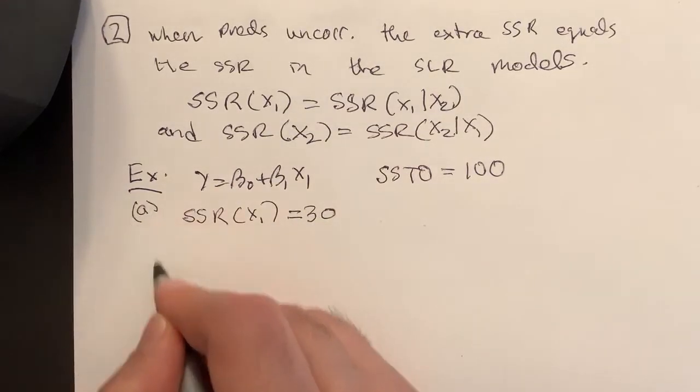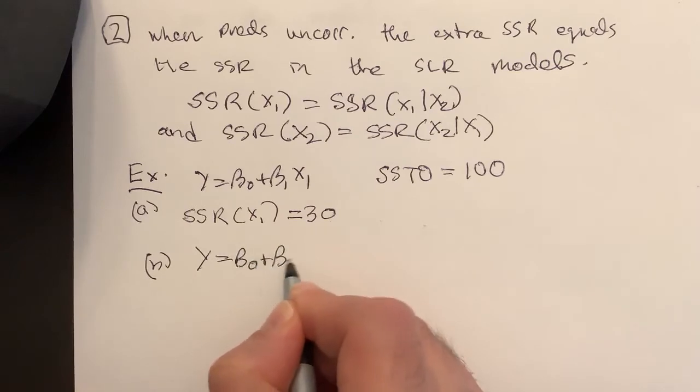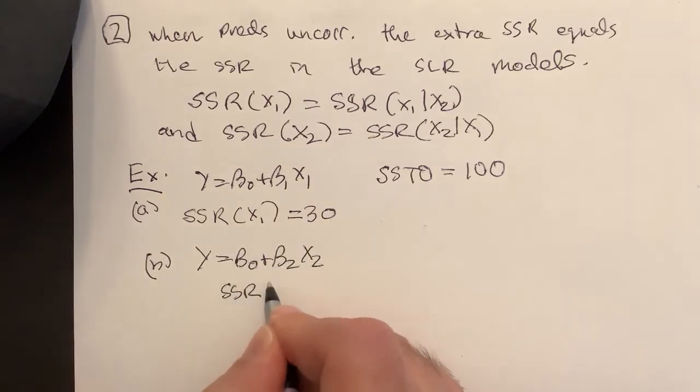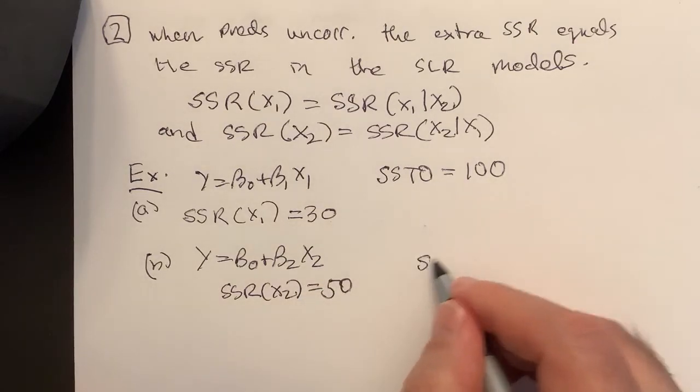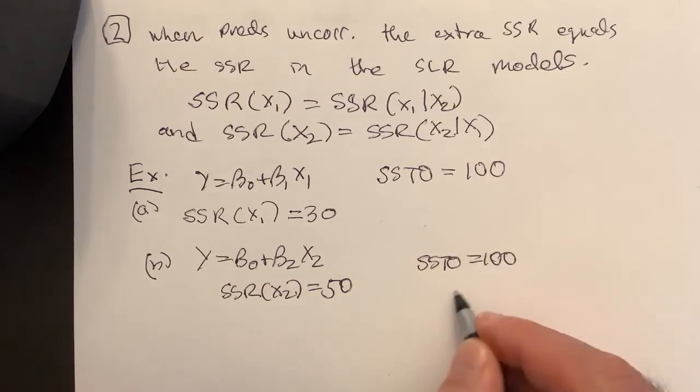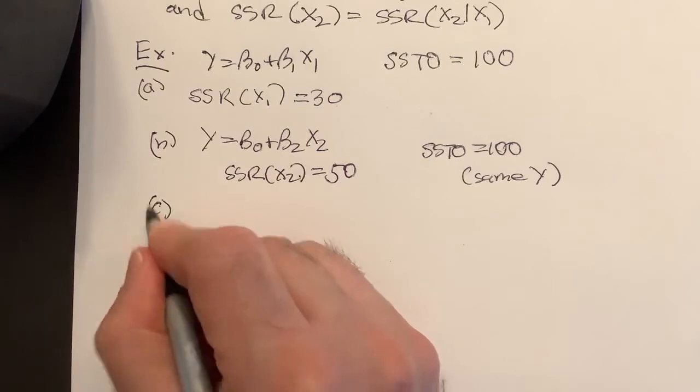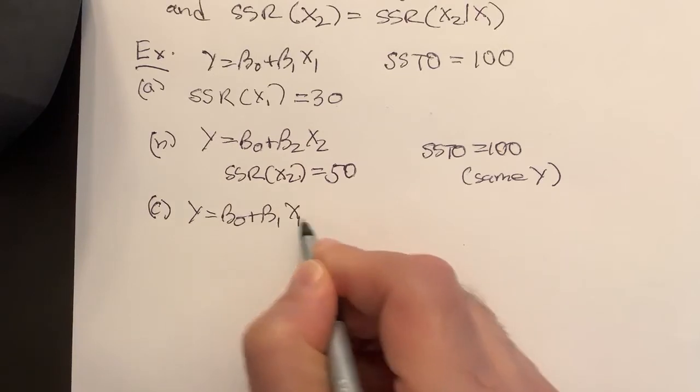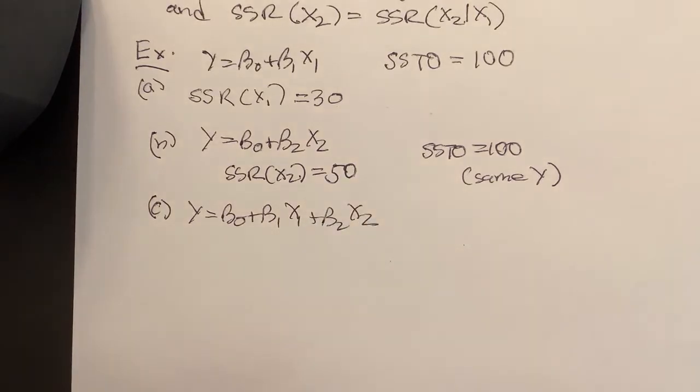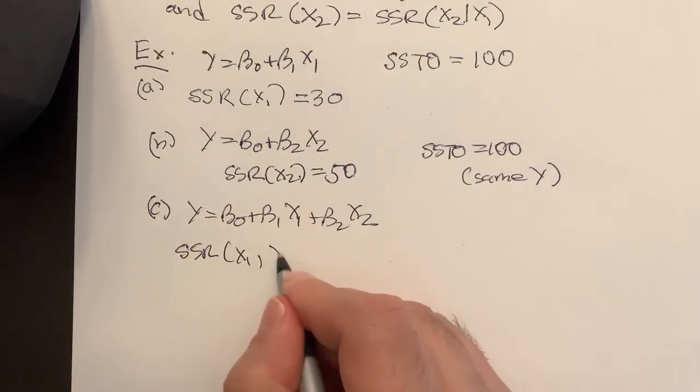For a different predictor, suppose we take x2. And we have the same SSTO, same y. Then if I model with both, so if I have y = β0 + β1x1 + β2x2, then we have SSR(x1,x2).